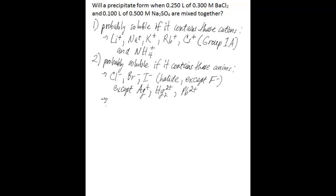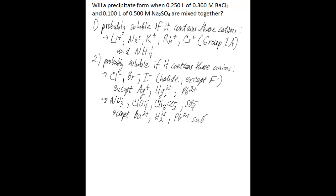The other anions to look out for — if these are part of a compound, it is probably soluble — are the polyatomic anions: nitrate, perchlorate, acetate, and sulfate. There are exceptions to these four as well: when these anions form compounds with barium, mercury(II), or lead, particularly when sulfate is bonded to one of these three cations, you will probably have something insoluble rather than soluble.